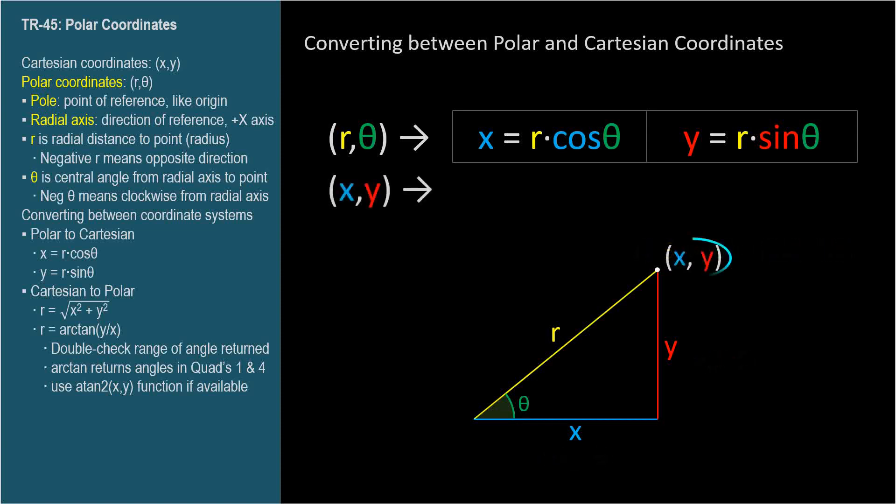Now let's go the other direction. We know a point's (x, y) coordinates, and we want to find its polar coordinates, r and θ. We can find r using the Pythagorean theorem. r² = x² + y², so r = √(x² + y²).